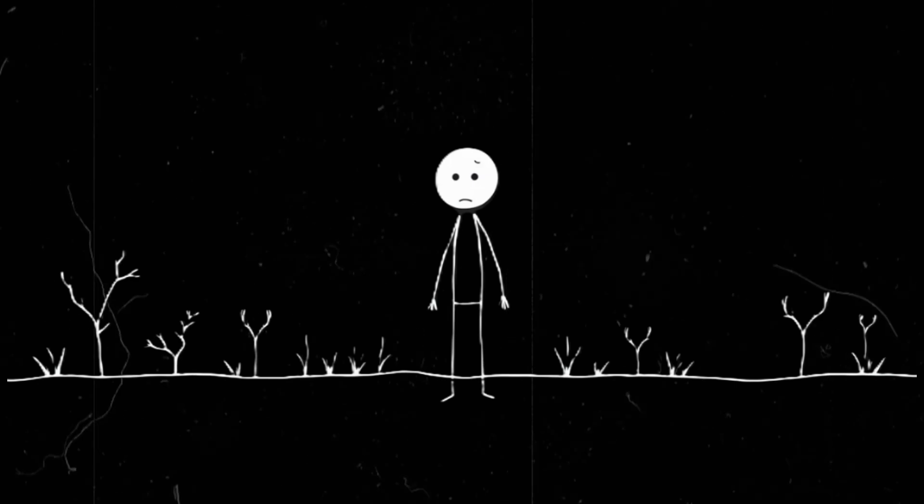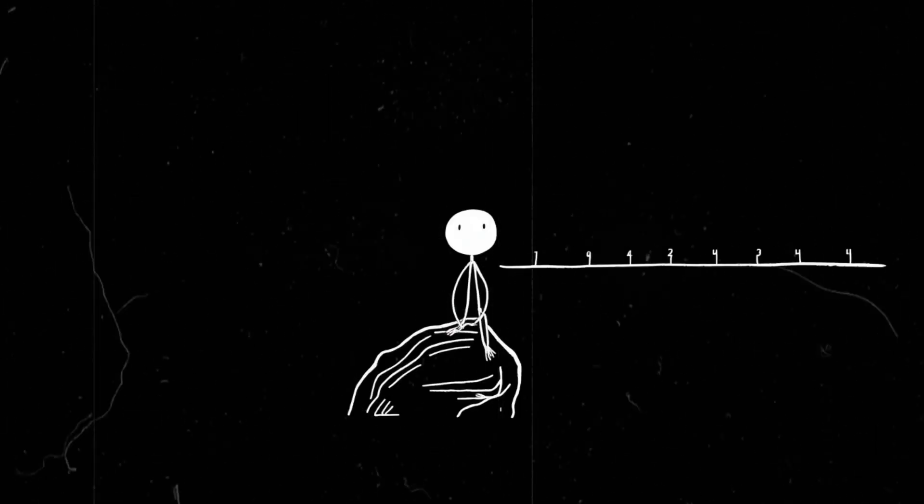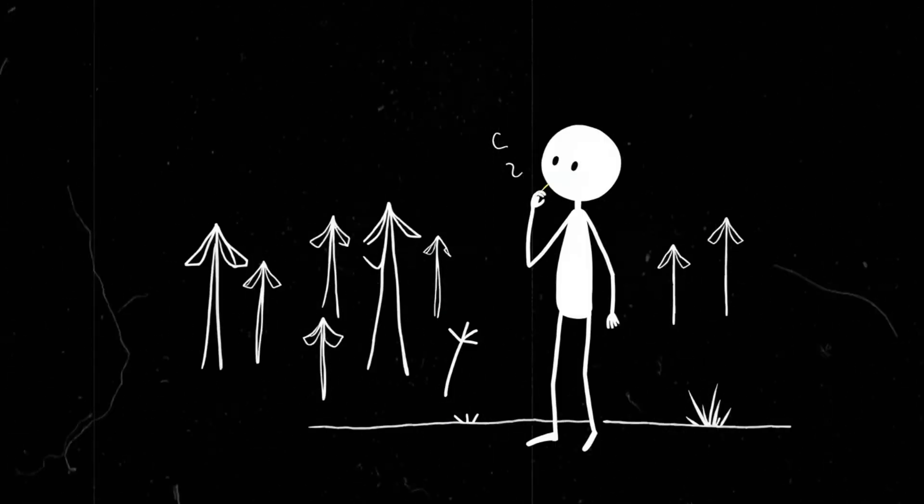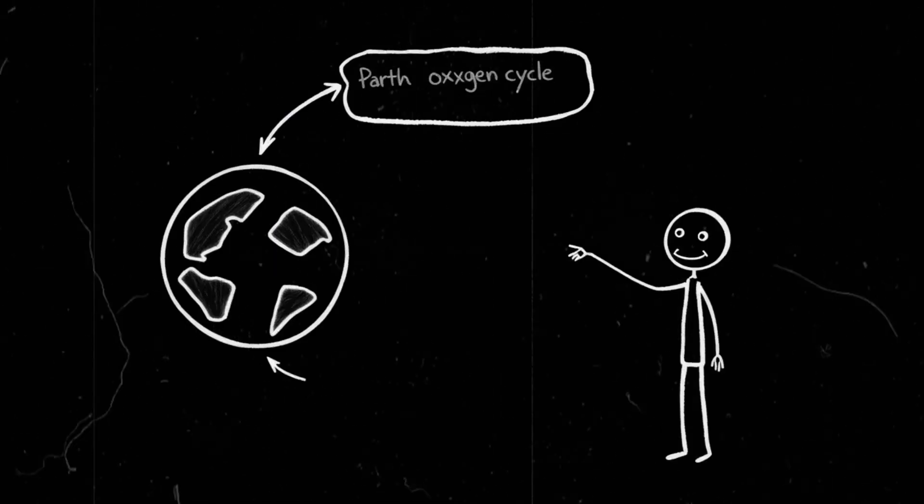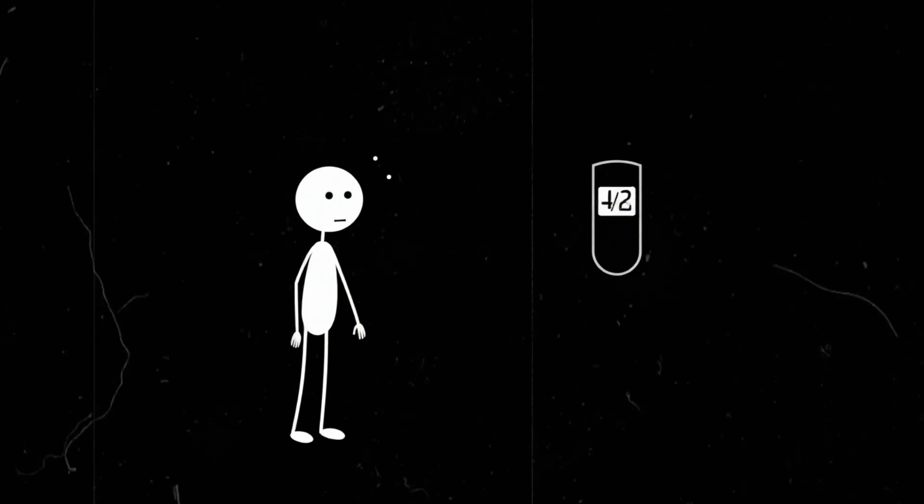Stage 4: Mass extinctions begin. If we somehow survive the immediate chaos, let's talk about the long-term effects. Because no clouds equals no rainforests. No rainforests equals no oxygen production. Yes, the ocean produces a lot of Earth's oxygen, but rainforests, especially the Amazon, are key players in keeping the atmosphere balanced. Without them, oxygen levels start dropping. Not overnight, but over decades, leading to massive ecosystem collapses.